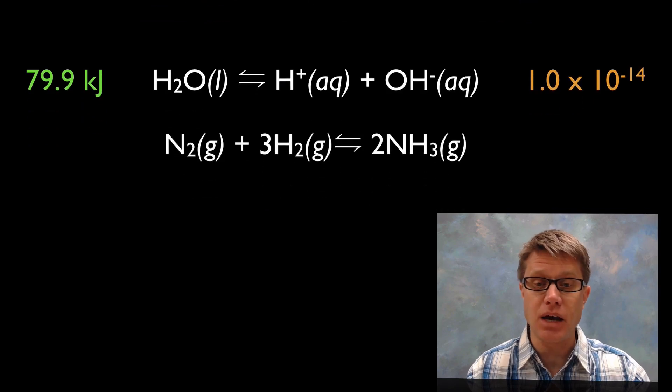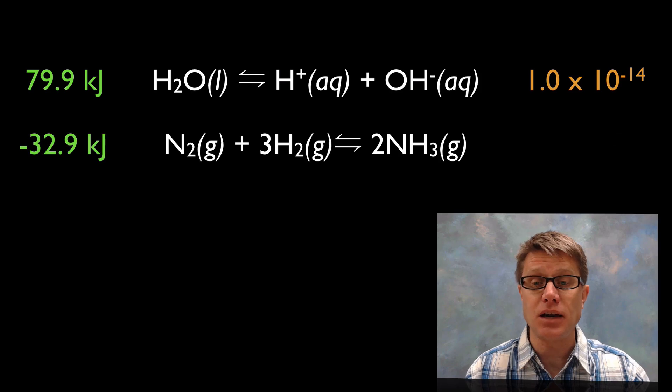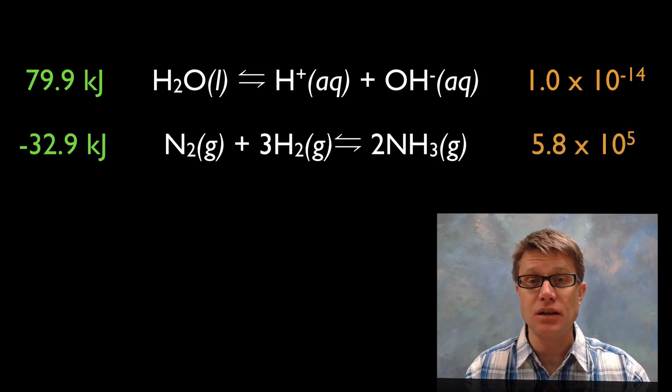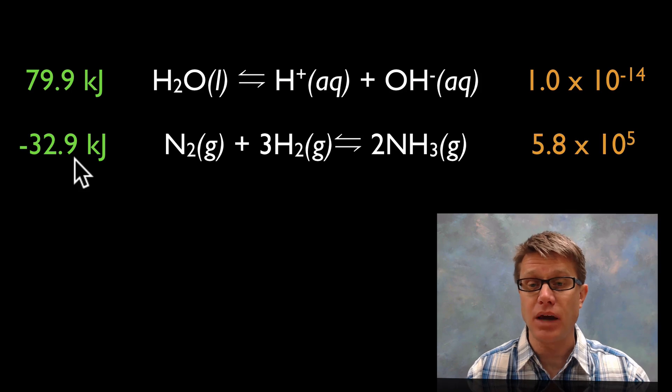If we look at another reaction, in this case we've got a delta G that's a negative value. What's that tell us about its K value? That's going to be a positive value. So this is a spontaneous reaction or a downhill reaction. And in this case it's shifted way towards the right.